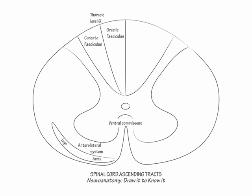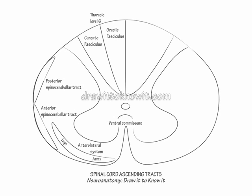Finally, label the posterior and anterior spinocerebellar tracts along the lateral wall of the spinal cord, posteriorly and anteriorly respectively. These tracts carry large sensory fibers to the cerebellum. In Friedreich's ataxia, a lateral column disorder, the posterior spinocerebellar tracts are profoundly affected.